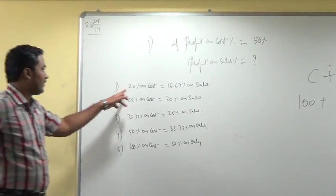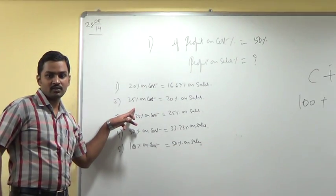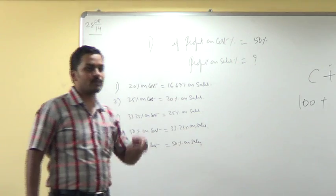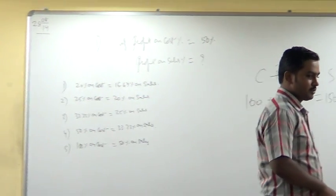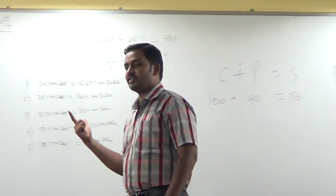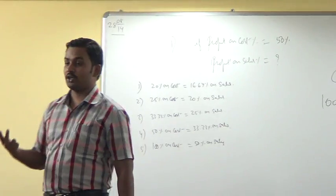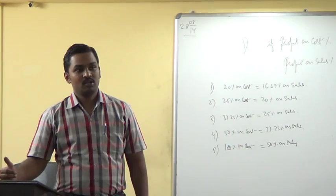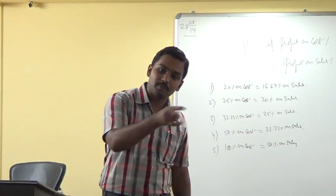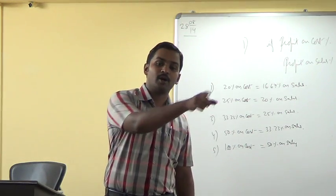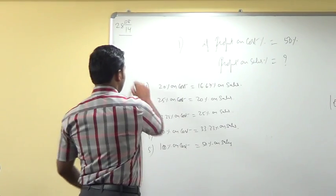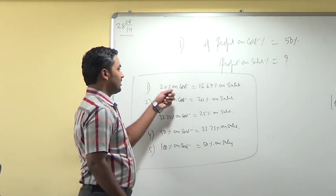We can prove all of these pairs. If you are given the on-cost percentage, you know how to calculate the on-sales percentage, and vice versa. You should be able to jump from on-cost percentage to on-sales percentage. The pairs to remember: 20% on cost equals 16.67% on sales; 25% on cost equals 20% on sales; 33.33% on cost equals 25% on sales; 50% on cost equals 33.33% on sales; 100% on cost equals 50% on sales. As homework, check whether these pairs are correct.